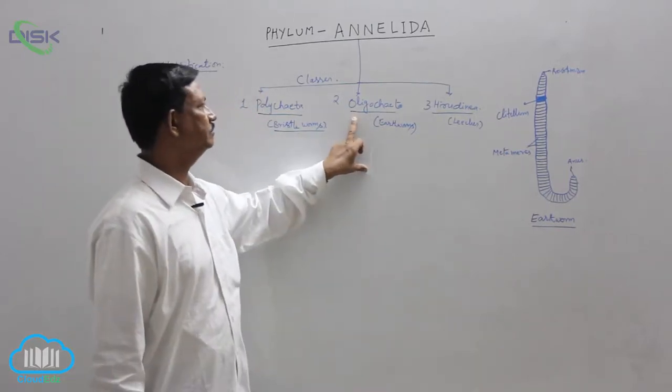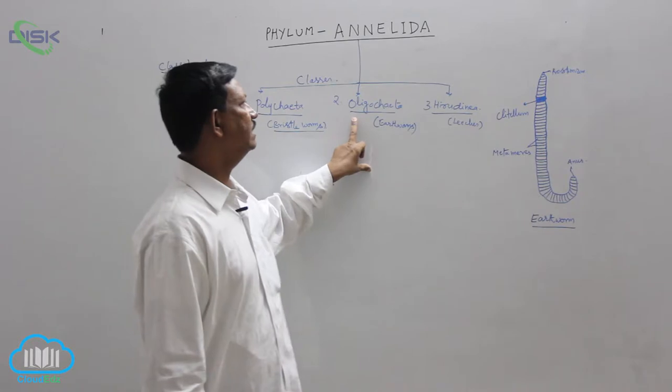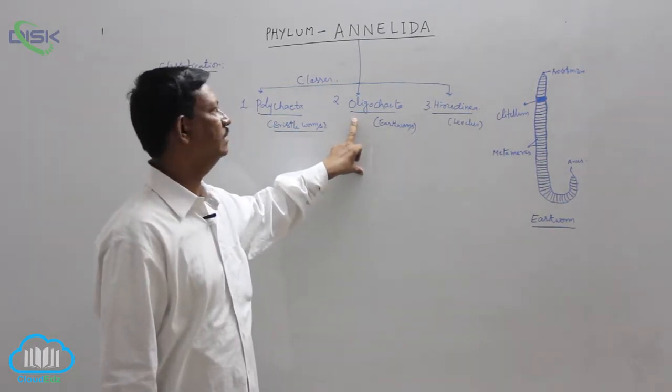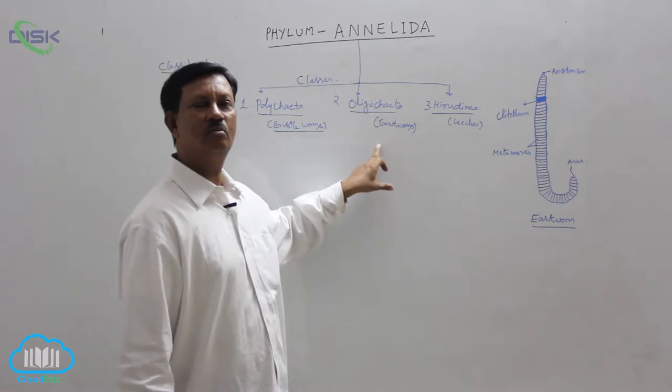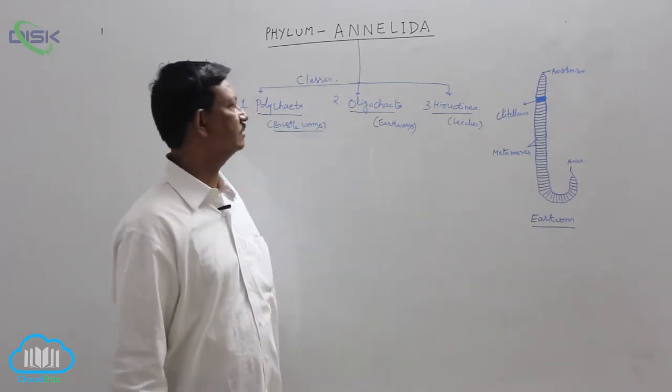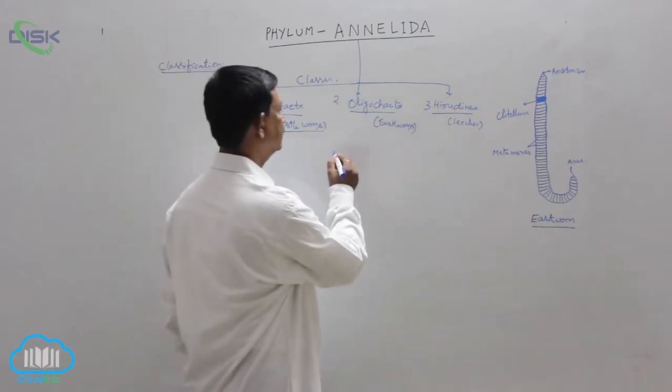Class Oligochaeta - a few number of chaetae are present here, hence the class name is derived as Oligochaeta. They are commonly known as the earthworms. Most number of earthworms are included in this class. The main characters are: